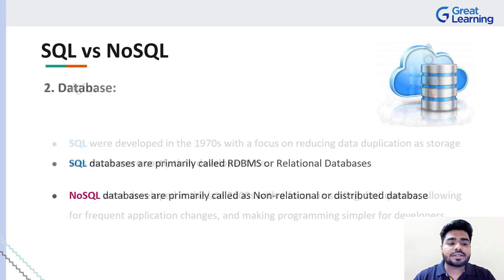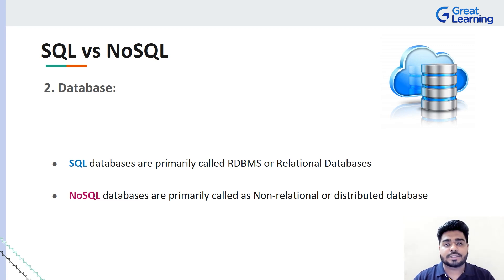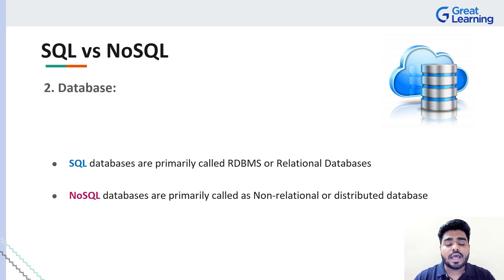The next comparison is the database type. SQL databases are primarily called RDBMS — relational database management systems, as we've already discussed. When it comes to NoSQL, these databases are primarily called non-relational, meaning there is no relation between multiple tables or multiple documents.